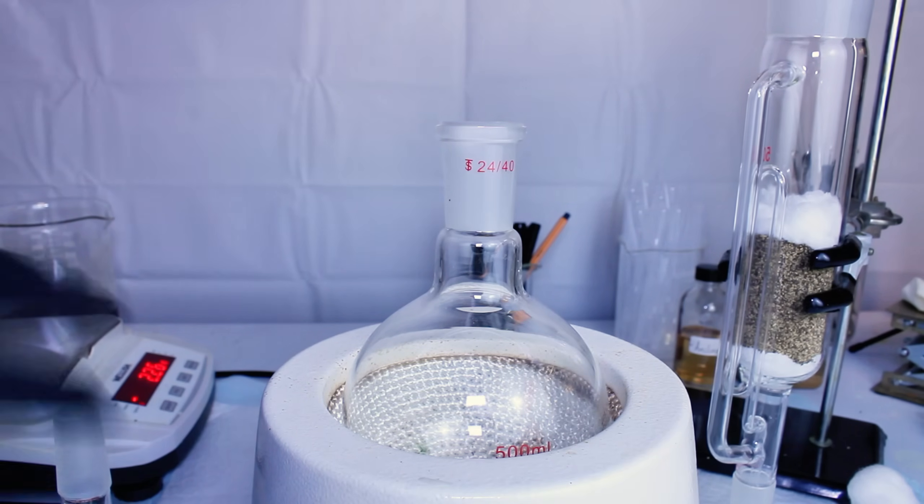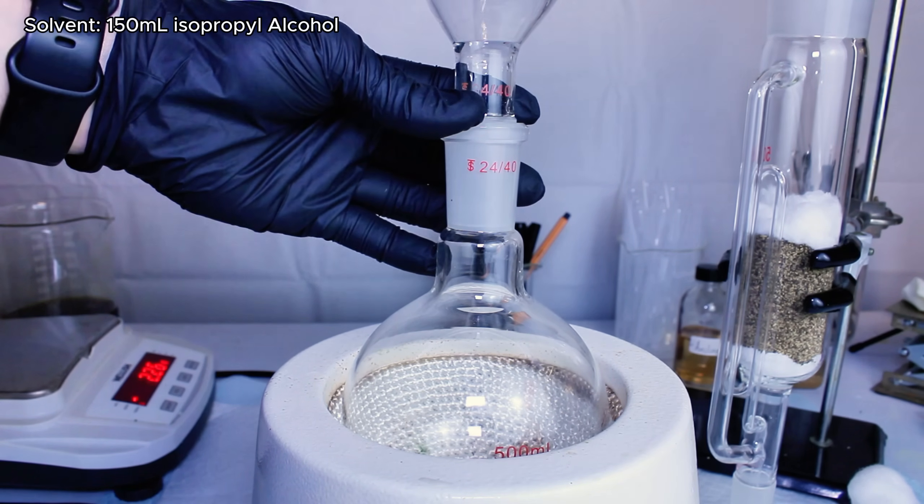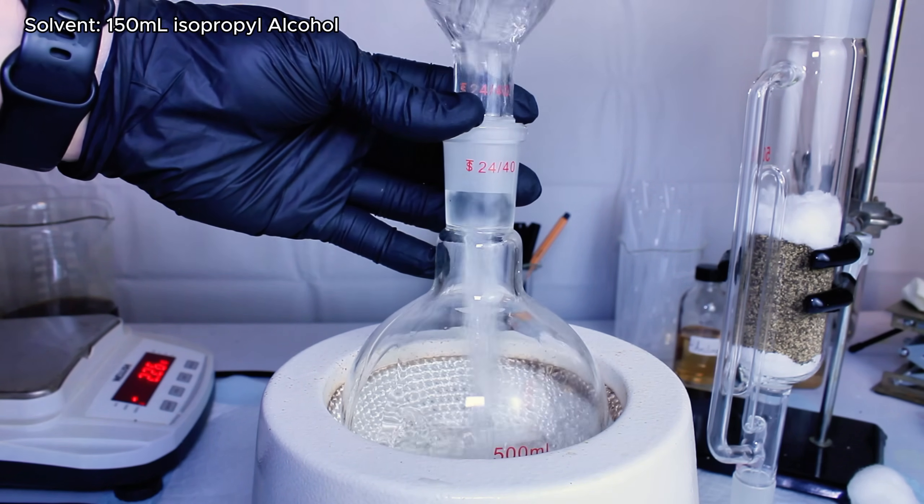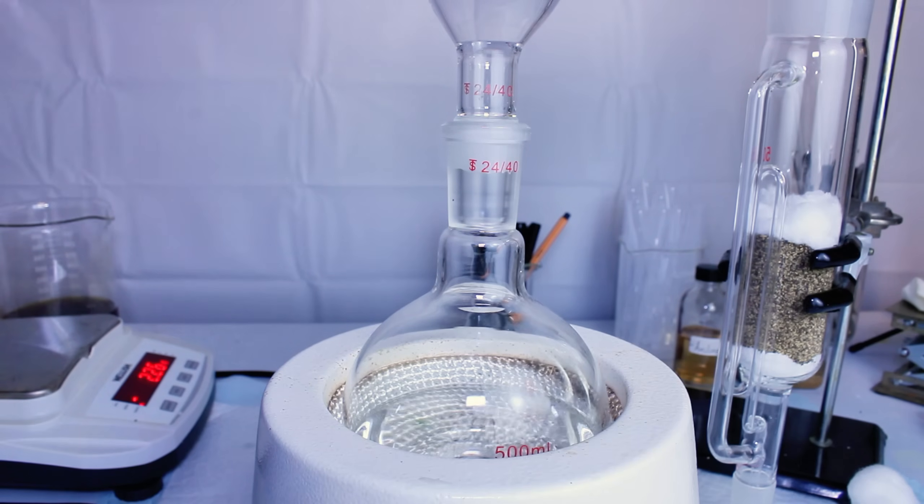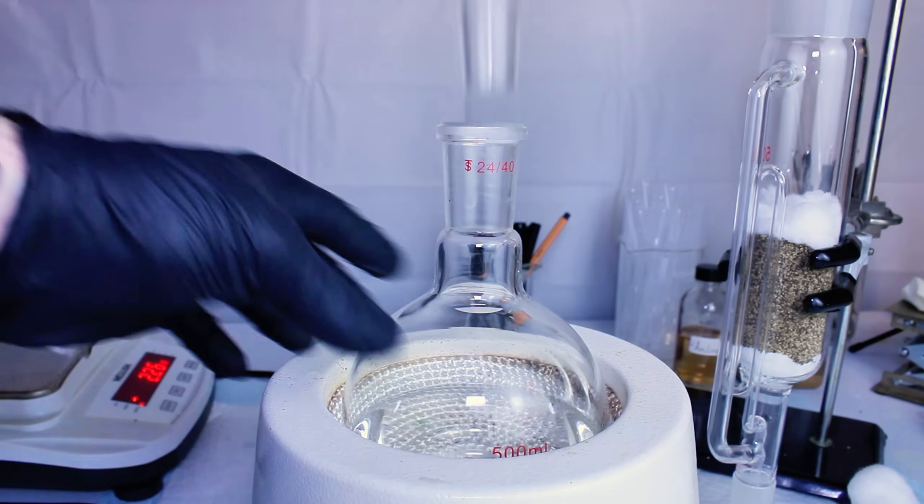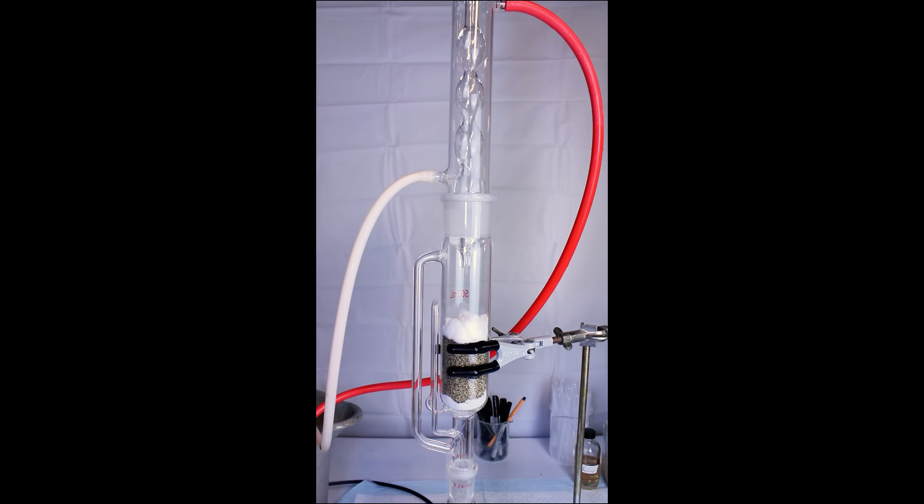I go ahead and set this aside, and then I pour 150 milliliters of isopropyl alcohol into a 500 milliliter boiling flask that's situated in my heating mantle. At this point, I just need to construct my extraction apparatus, and to do this, I simply connect my Soxhlet Extractor to the boiling flask, and then I connect an Allihn condenser above the Soxhlet Extractor.